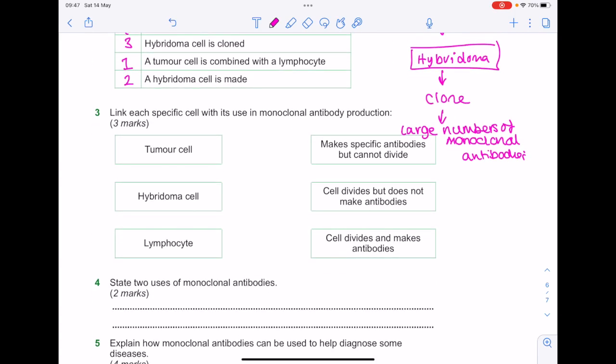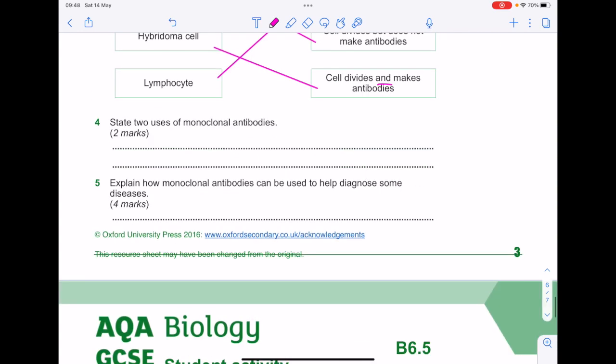Link each specific cell with its use in monoclonal antibody production. So remember the lymphocyte makes antibodies but can't divide, which means it has limited use by itself. The tumor cell is just a cell that divides very rapidly but doesn't make antibodies. It's that hybridoma cell which divides and makes antibodies, so mega useful. State two uses of monoclonal antibodies: pregnancy tests, treatment of cancer.